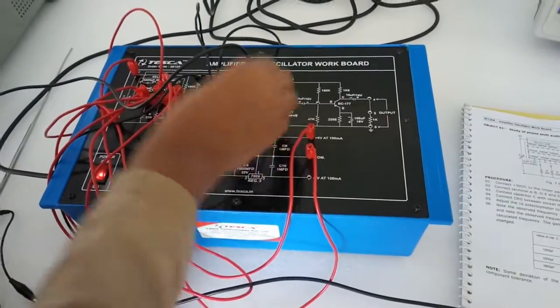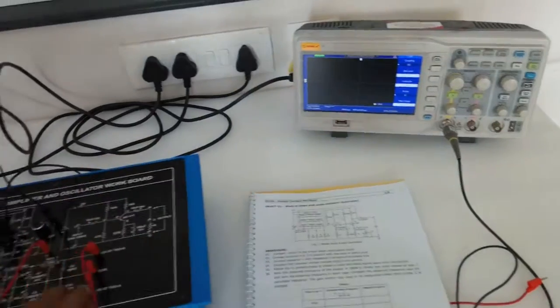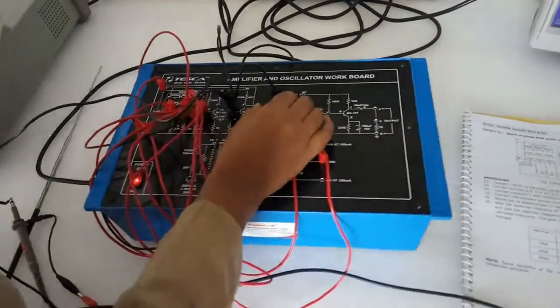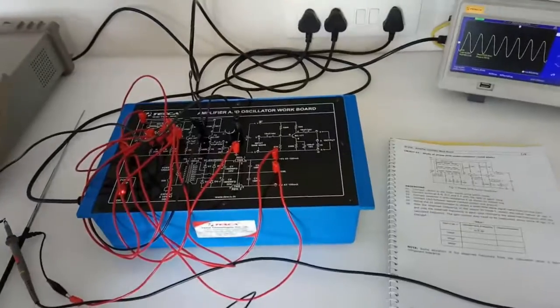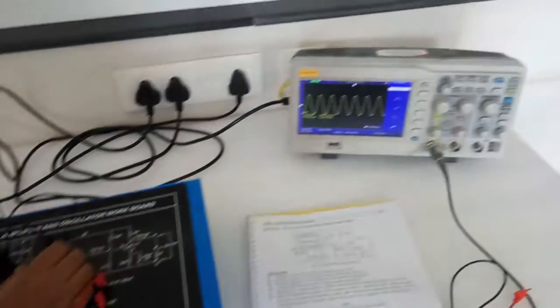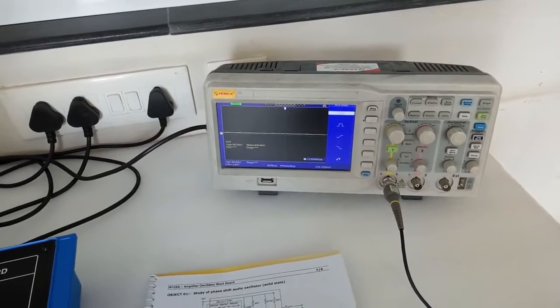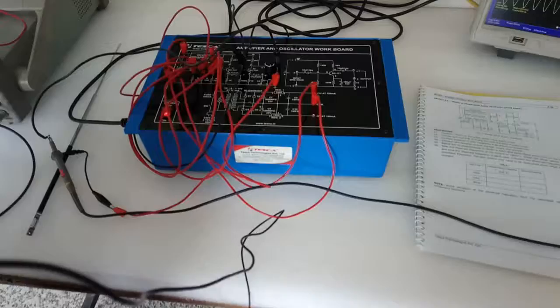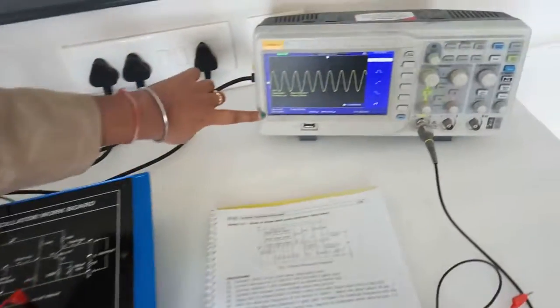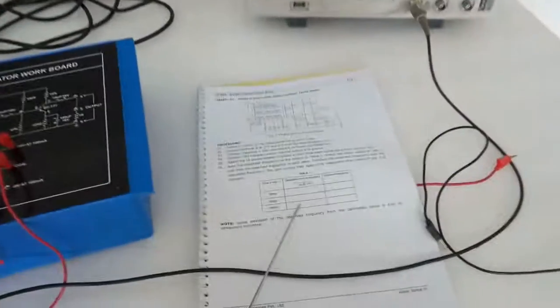Now, with the help of this potentiometer, adjust it. Adjust this potentiometer till we get a clean sine wave signal. Observe the frequency from the DSO and note it down here at the table that is given in the manual.